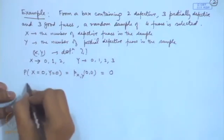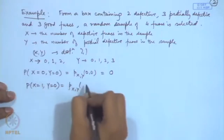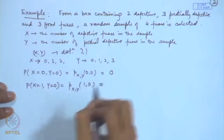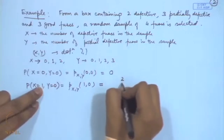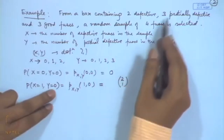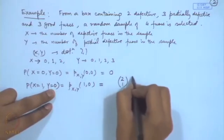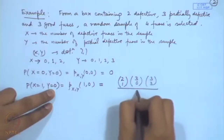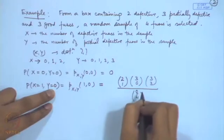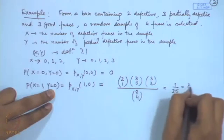Consider P(X=1, Y=0), written as p_{XY}(1,0). This means one defective is selected from two, none from partially defective, and three good ones. So it is (2C1)(3C0)(3C3) / (8C4), which turns out to be 1/35 or 2/70. For P(X=0, Y=1), that is p_{XY}(0,1) = (2C0)(3C1)(3C3) / (8C4), evaluated as 3/70.